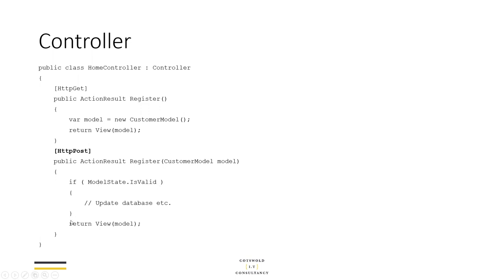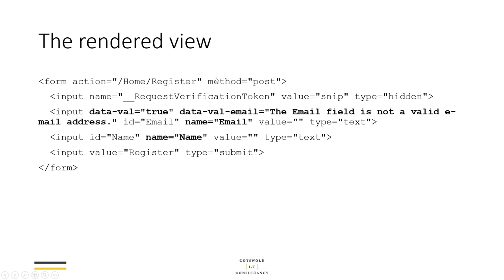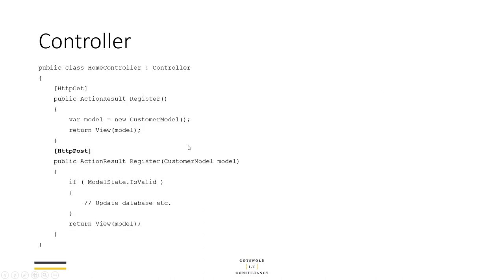Server-side validation is as simple as checking if ModelState.IsValid. That will run the validators and double-check the entered data. If it isn't valid, you return that same model back to the view, which will show the errors. If it is valid, you do whatever you need to — register a customer, update the database, and so on. Then maybe redirect or stay on the same page. No magic ViewState — literally just the model binder looking at the posted data and putting the form properties into the CustomerModel.